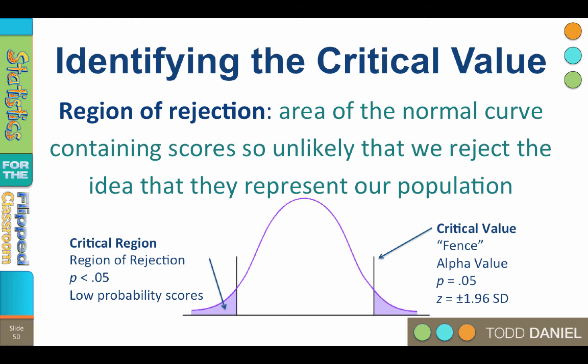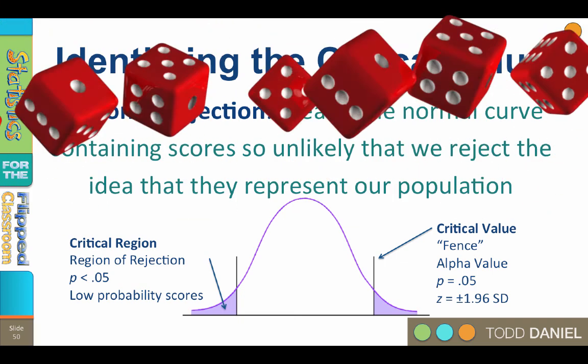If the test mean does not lie beyond the critical value, then the sample is not in the region of rejection. Therefore, the sample test mean is likely to represent the original population.